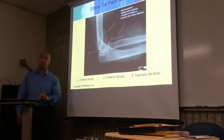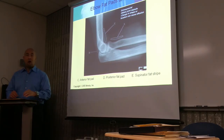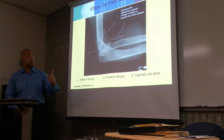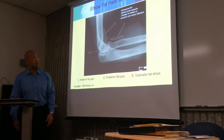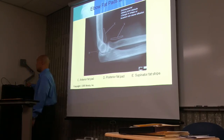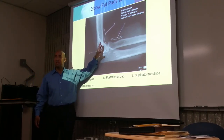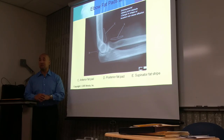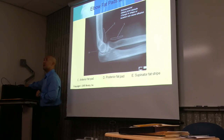Fat pads are also located around the elbow — they are extra-synovial pockets. Even if you don't see a fracture, doctors will look for any movement or displacement of those fat pads. You don't need to know the exact locations or names; just know that fat pads exist and we examine the area for any trauma occurring around joint capsules.